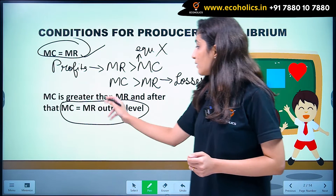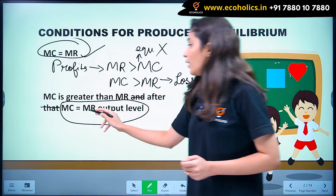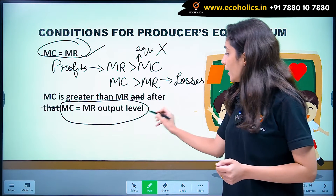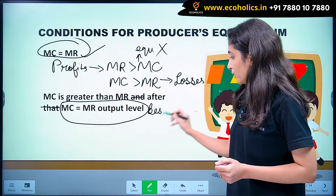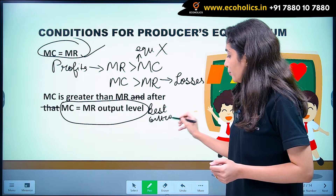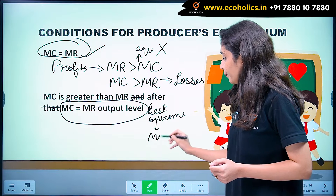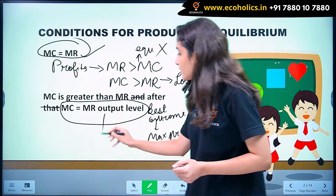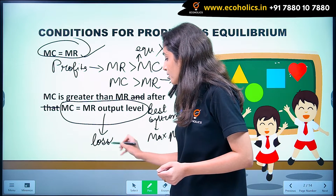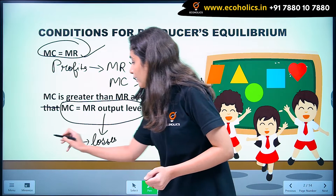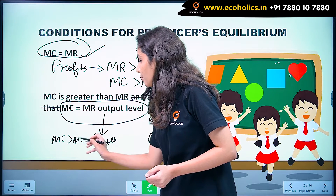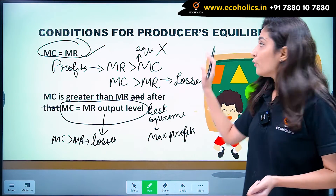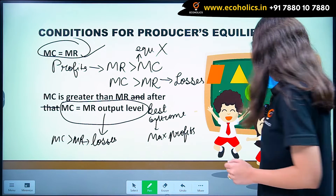The second condition is that marginal cost is greater than marginal revenue after the MC equals MR output level. This should be our best outcome — the point where the producer is earning maximum profits. If he produces beyond this point, he will be incurring losses because marginal cost becomes greater than marginal revenue.